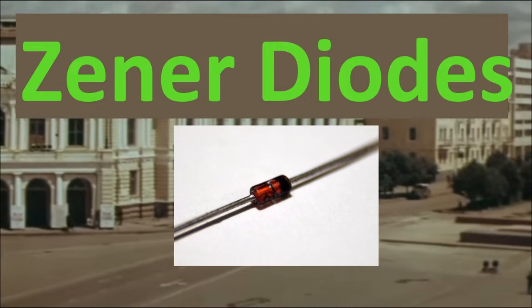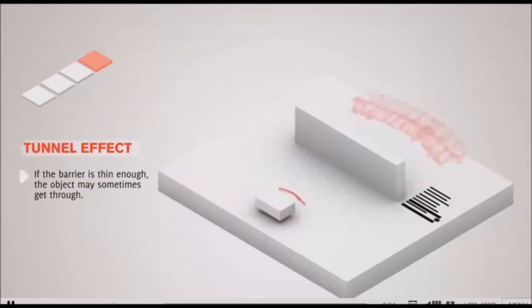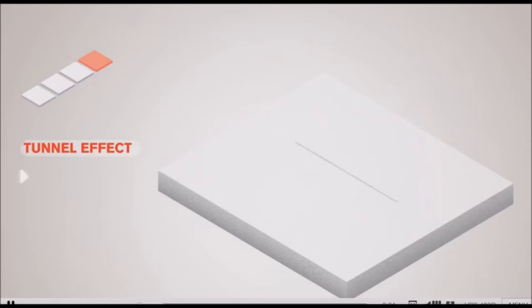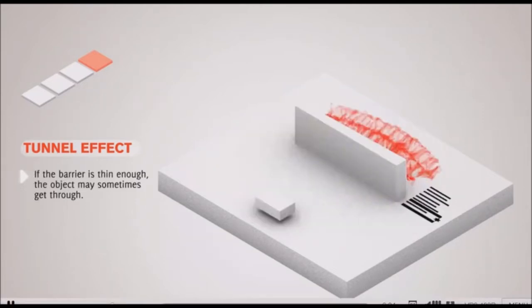diode junction breakdowns occurring below 5 volts are caused by the Zener effect, whereas breakdowns occurring above 5 volts are caused by the avalanche effect. Tunneling is a subject I briefly looked into and is very relevant to Zener diodes, but the level of theoretical verbiage is more than I can handle. As well, as an electronics hobbyist, I see diminished benefit in deeply studying tunneling.